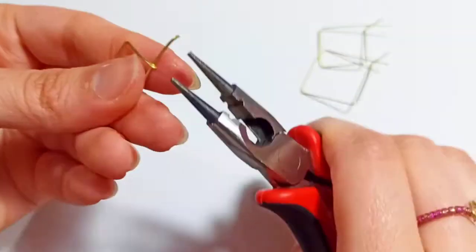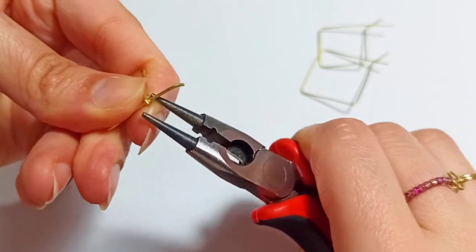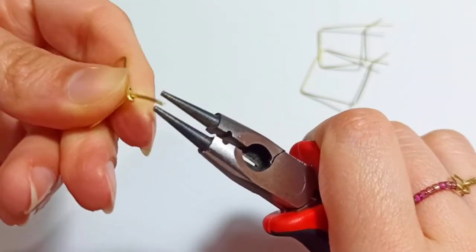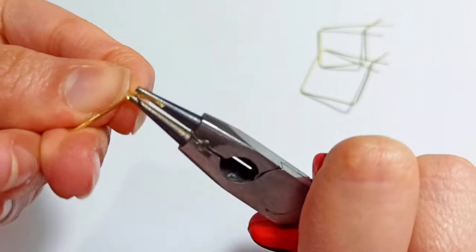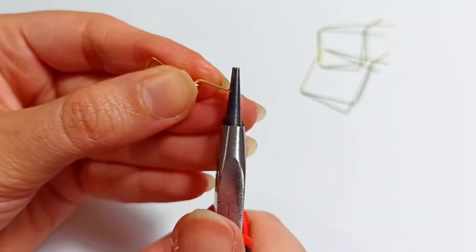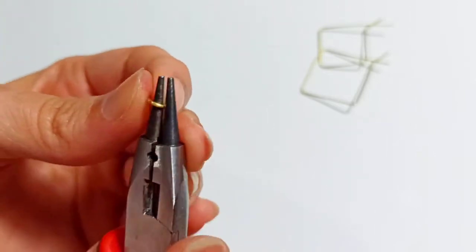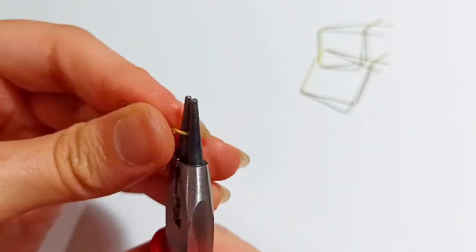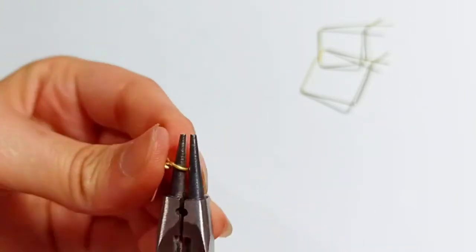At the other strand, we make a 90 degree bend and with our round nose pliers, make a little loop.